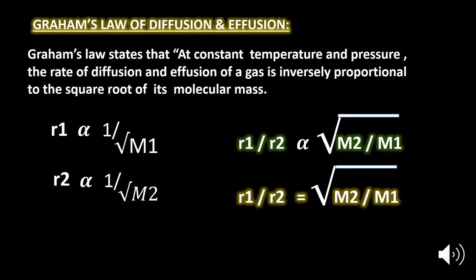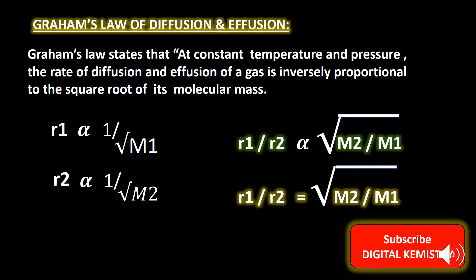Graham's Law of diffusion or effusion in terms of molar mass states that at the same temperature and pressure, the rate of diffusion or effusion of a gas is inversely proportional to the square root of its molar mass. We know that the rate of diffusion or effusion of a gas is equal to the distance covered by a gas in a unit time. Here R₁ represents the rate of diffusion or effusion of the first gas, and R₂ represents that of the second gas. Mathematically, R₁ is inversely proportional to the square root of the molar mass of the first gas.